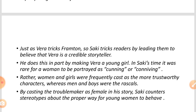Everyone believes whatever she says. Saki does this in part by making Vera a young girl. In Saki's time, it was rare for women to be portrayed as cunning or convincing. The writer depicts Vera as a young girl, and in the time of the storyteller it was rare for a woman to be portrayed as cunning — women and girls were not seen as naughty.